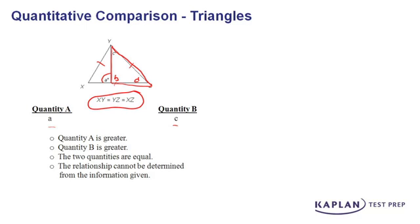And the external angle theorem says that angle A is going to equal the sum of the two non-corresponding angles, in this case C and D. Those are the non-corresponding angles.